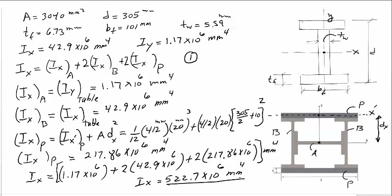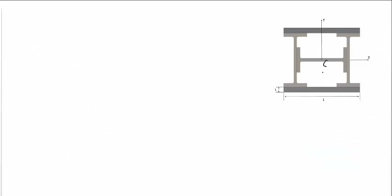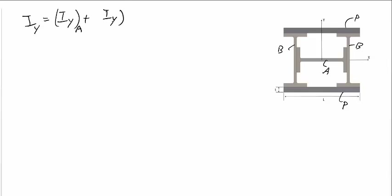Next, we calculate the moment of inertia with respect to the Y axis. Again, we label the horizontal profile A, the two vertical ones B, and the plates P. The total Iy equals: Iy of profile A, plus Iy of profile B times 2, plus Iy of the plate times 2. We will calculate each term separately.